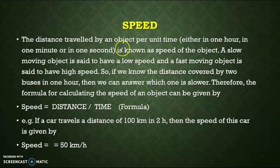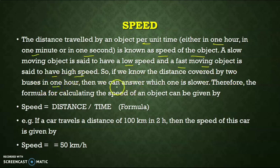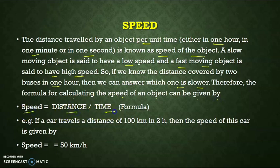Speed. The distance travelled by an object per unit time is known as speed — whether in one hour, one minute, or one second. A slow-moving object is said to have slow speed, and a fast-moving object is said to have high speed. The formula for calculating the speed of an object is: speed is equal to distance divided by time. This formula is used to calculate the speed of different objects.